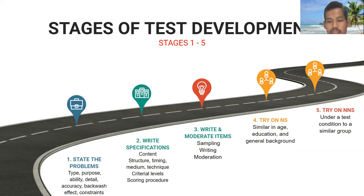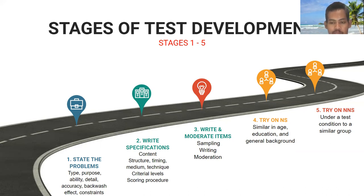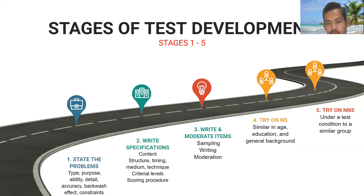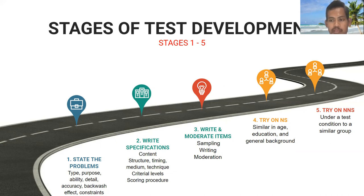On the next stage, we can conduct the trial on native speakers. The native speakers should be similar in educational and general background. This trial can be held in an informal situation — it doesn't have to be under test conditions. When an item is found difficult for native speakers, it needs revision or rejection. After trialing on native speakers, the items are then tried on non-native speakers under test conditions with a group similar to those the test is intended for.